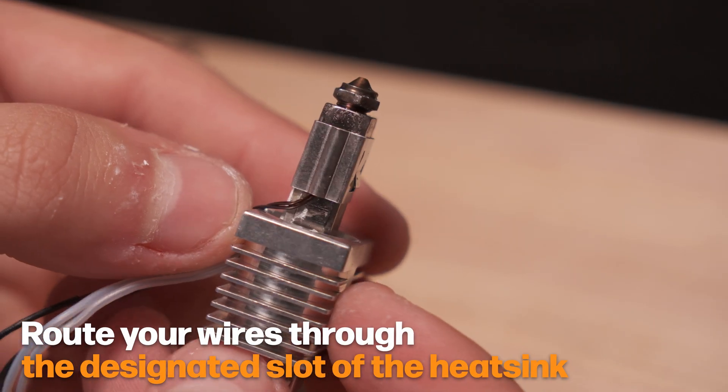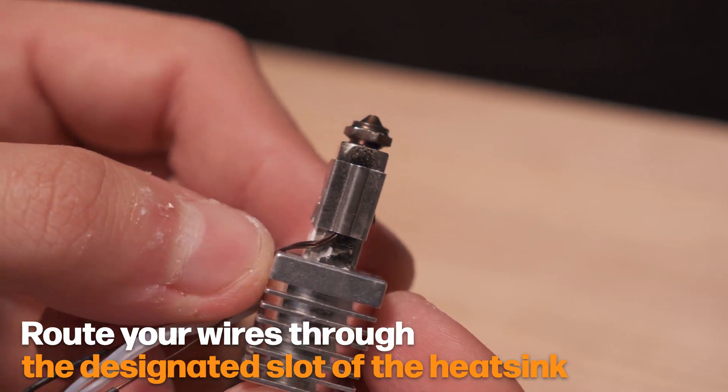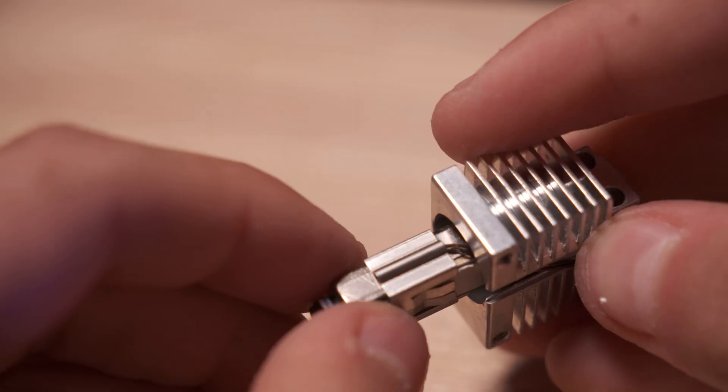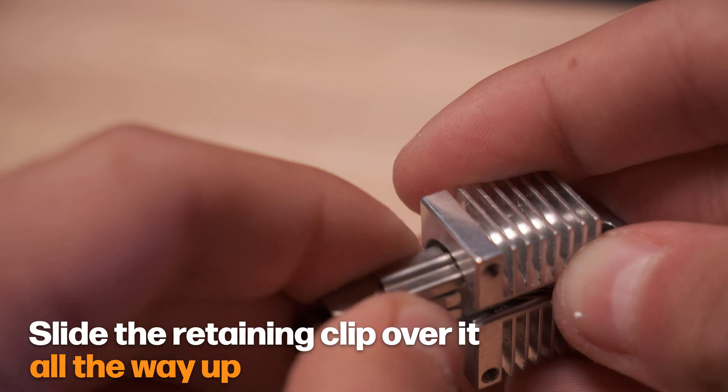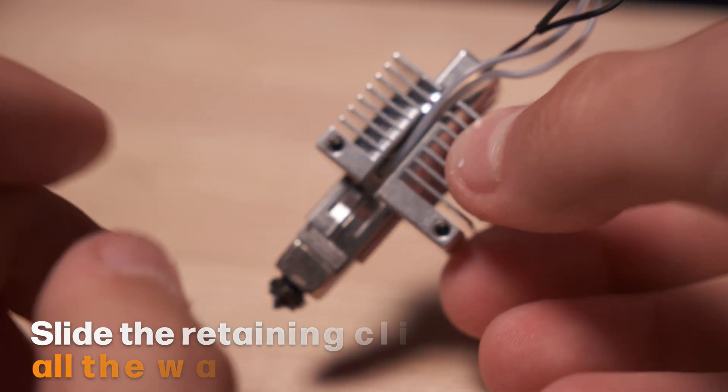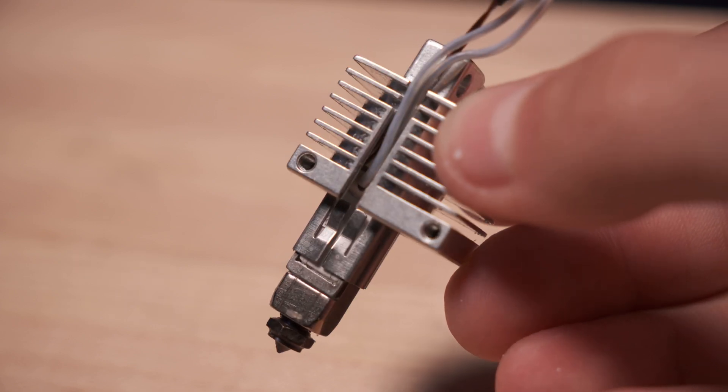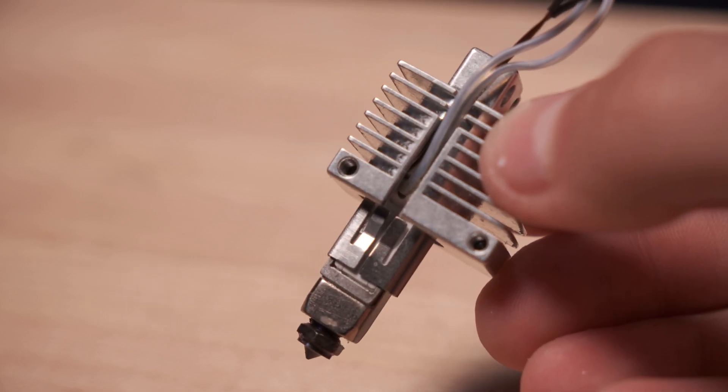Make sure that cables for the sensor and the heater are wired through the wire guide slot in the Mako heat sink. Next, you'll want to slide the retaining clip all the way up the hot block until it hits the shoulder. You want to make sure that it's pushed all the way up there so that it firmly seats the heater and presses it against the hot block all the way.